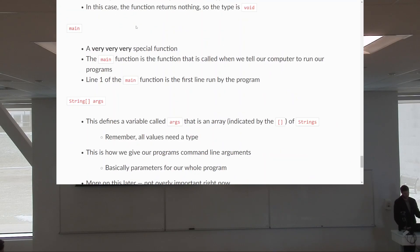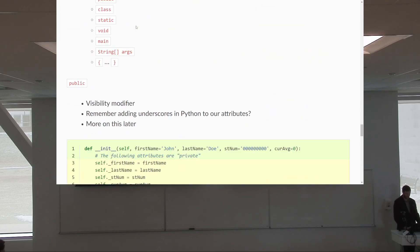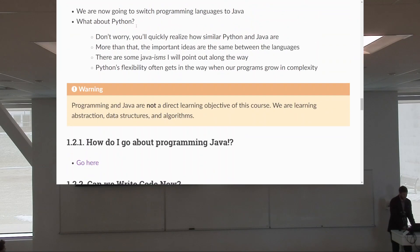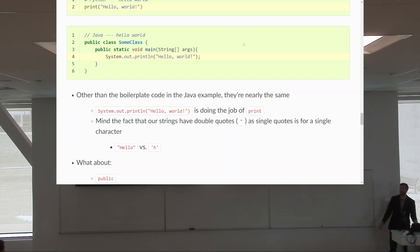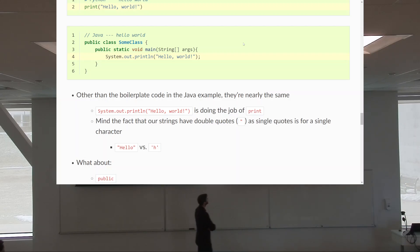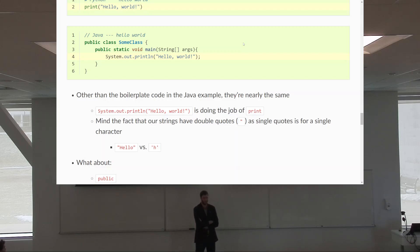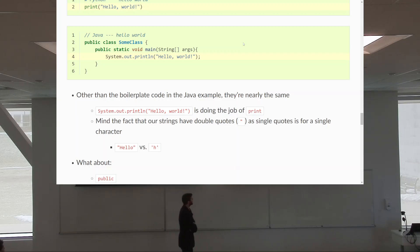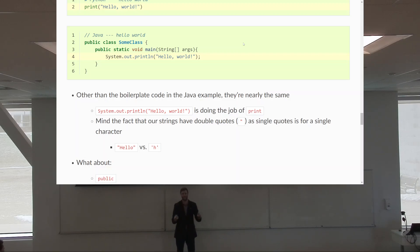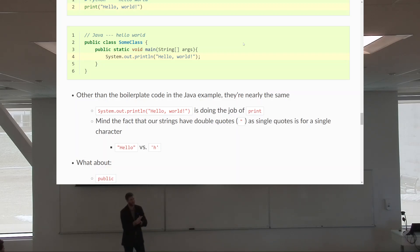String args — those are the parameters for this function. The main method often has something like 'string args.' There's a parameter named 'args,' short for arguments, and its type is String array — it's an array because we have the square brackets. Arrays are more primitive than lists; lists are actually fairly sophisticated data structures. You can think of it as a function that takes a list of strings — really it's an array of strings, but that's the idea.